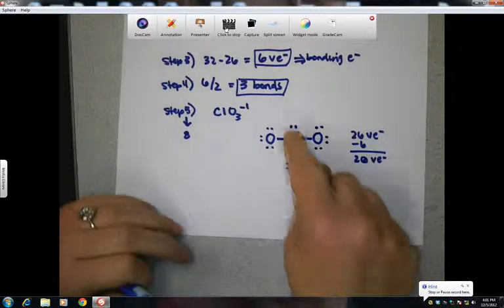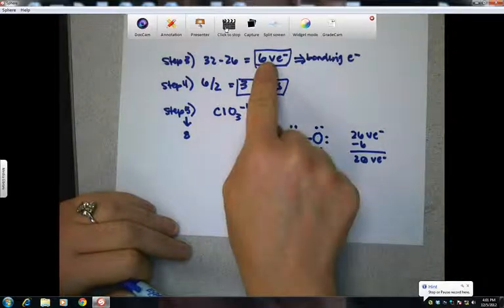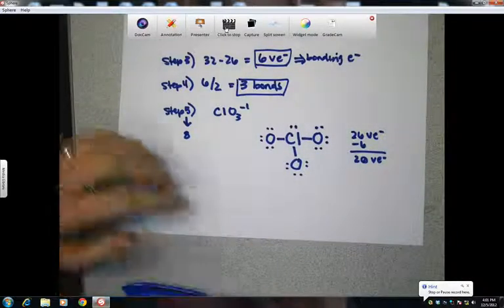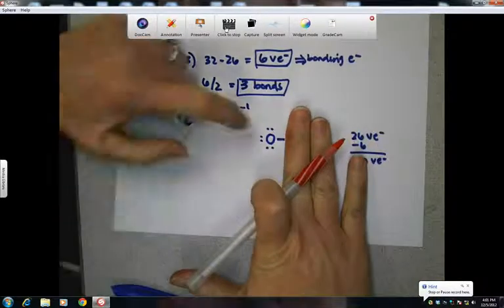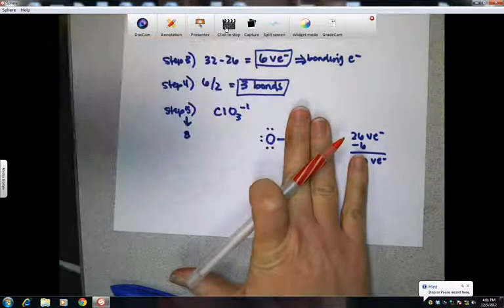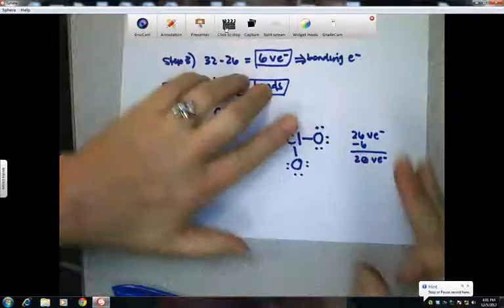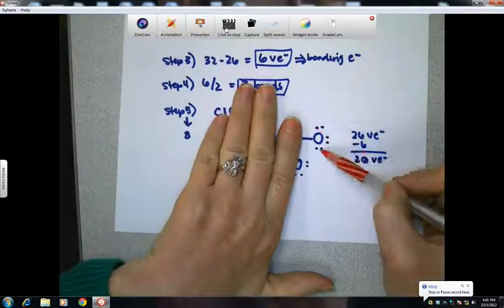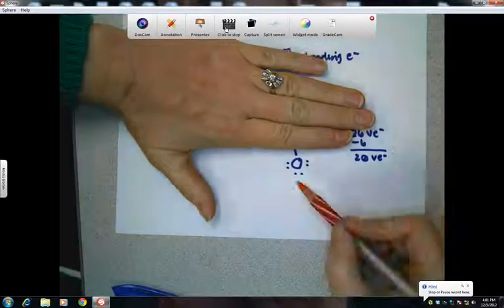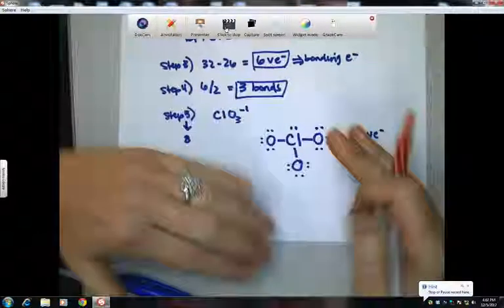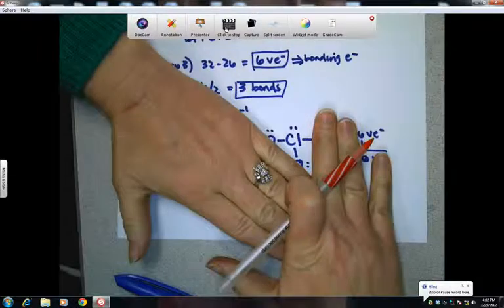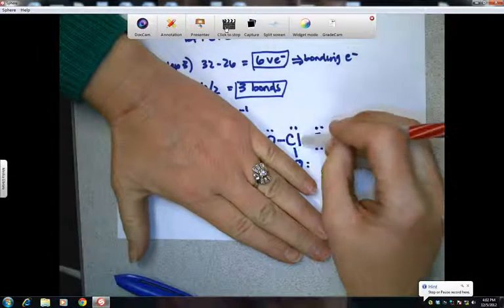Six of them were involved in bonds, just like we said they should be, three bonds. And everyone, if you look, oxygen has its two, four, six, eight valence electrons. This oxygen, two, four, six, eight. This oxygen down here, two, four, six, eight. And if you look at our chlorine in the middle, it's going to be kind of hard to cover these. It also has two, four, six, eight. So everyone's happy.